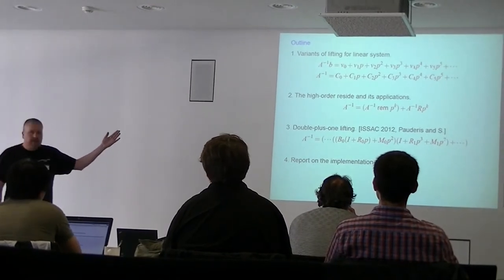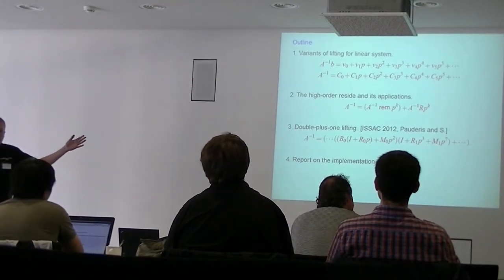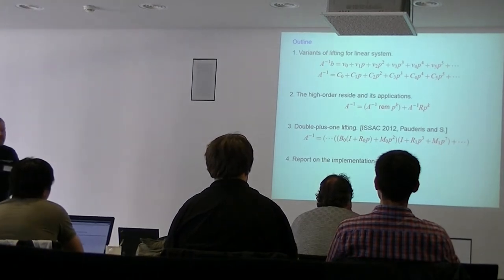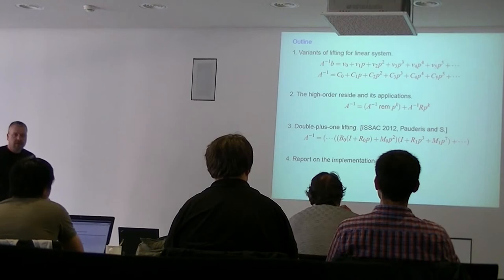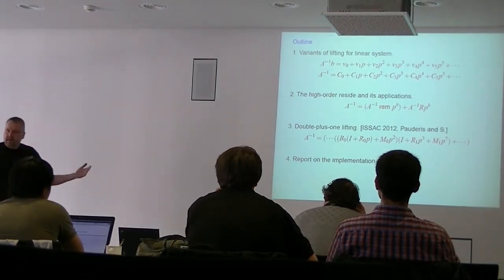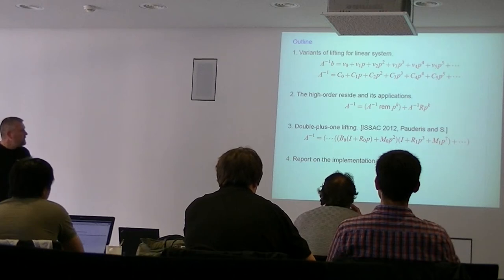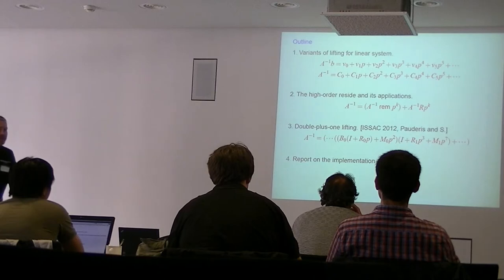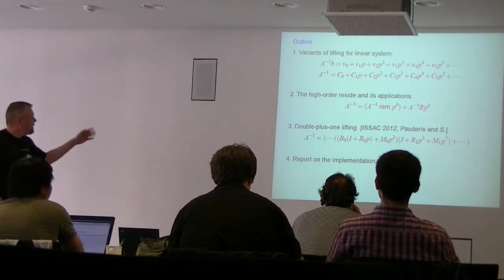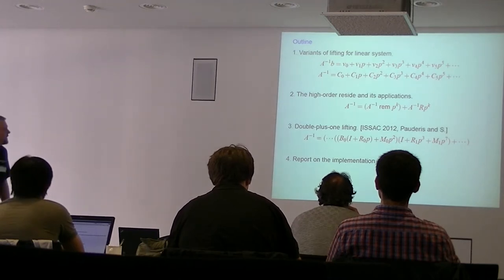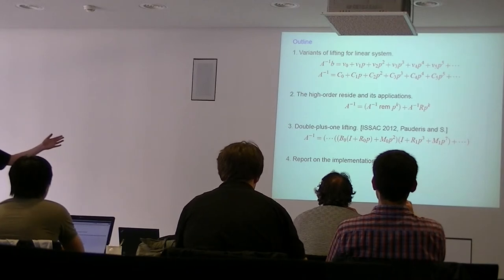What does lifting do? It takes a linear system where A has entries from the integers or rational numbers and extends out the solution — A versus B for a system solution — giving a series expansion. If B is the identity matrix, we get the entire inverse of A. That's what motivated the original work on lifting over the last 20 to 30 years.